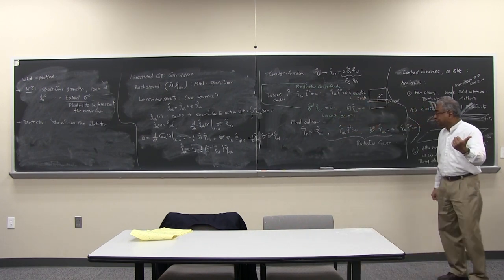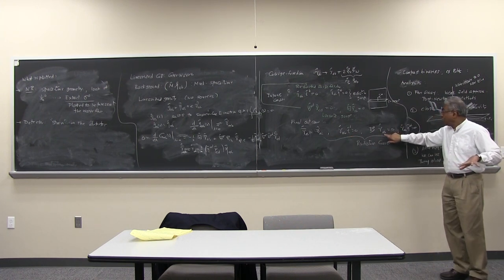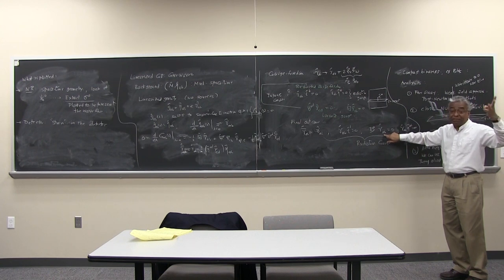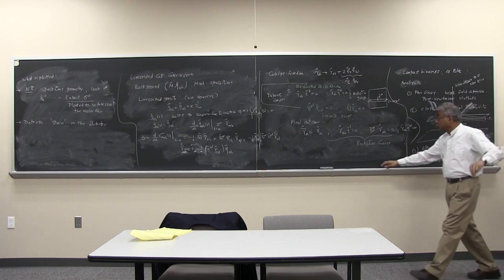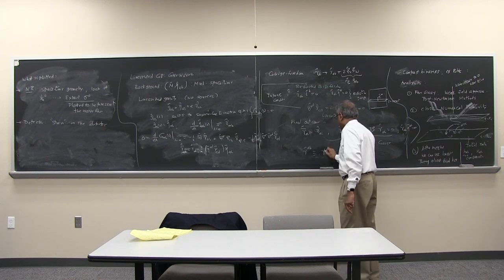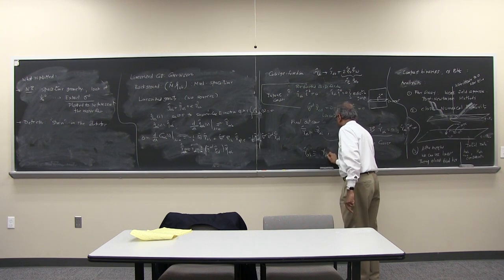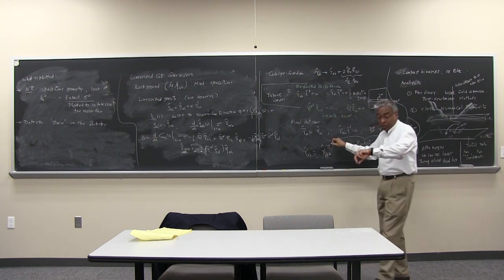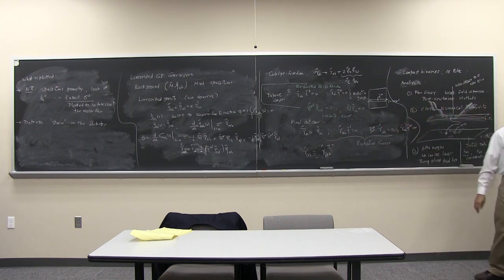So the linearized gravitational field representing the source-free solution — therefore waves — can be represented completely by a spatial tensor which is symmetric, transverse, and traceless. This is all called the transverse-traceless gauge. A spatial symmetric tensor has six components; it's transverse — three components are killed — so I'm left with three components; and finally it's traceless — so only two components remain. So γ^{TT}_{AB} — transverse traceless — has two independent degrees of freedom.